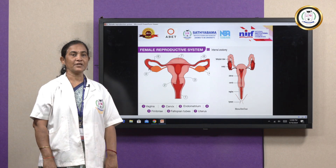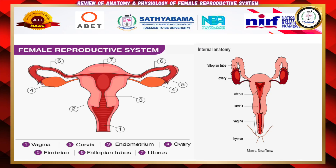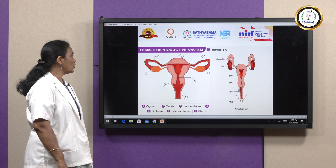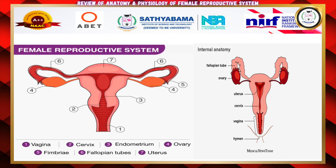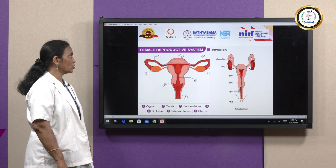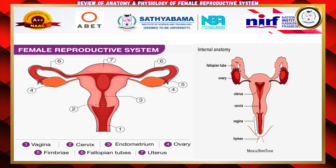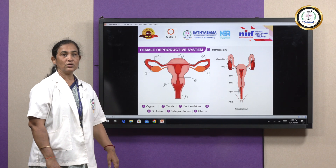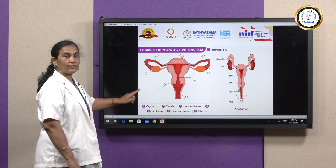Before going to the topics, a little bit of introduction. Female reproductive organs — what are the things will be there? First one is the vagina, second will be the cervix, third will be the endometrium, fourth will be the ovary, fifth will be the fimbria, sixth will be the ampulla that is the fallopian tube, and seventh will be the uterus. This is about the female reproductive organs and how it looks. In the internal anatomy, the pictures show how the fallopian tube is attaching with the ovary, connecting with the uterus and the cervix, then the vagina and down the hymen.